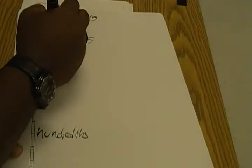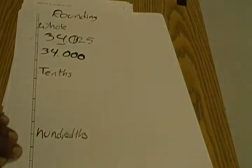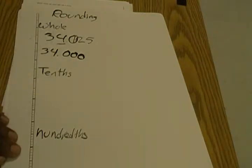We don't change it to a three. Everything to the left of the rounded place stays the same; everything to the right changes to zero. In this case, if they write 34, that's fine. If they want to write 34.000, that's fine too.